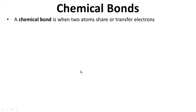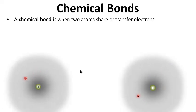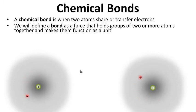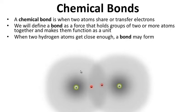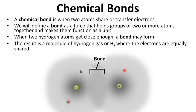A chemical bond is when two atoms share or transfer electrons. We will define a bond as a force that holds groups of two or more atoms together and makes them function as a unit. So when two hydrogen atoms get close enough, a bond may form. The result is a molecule of hydrogen gas, or H2, where the electrons are equally shared.